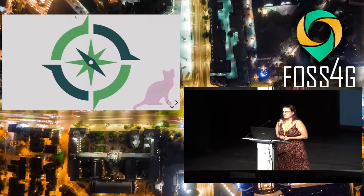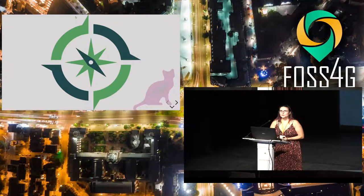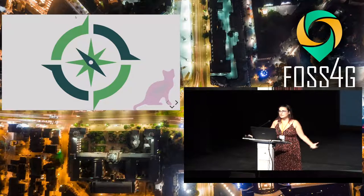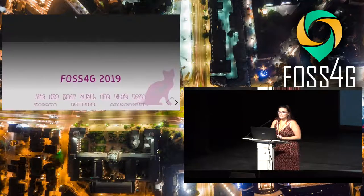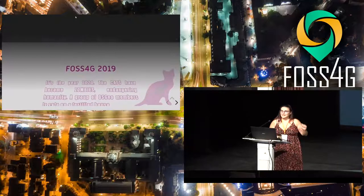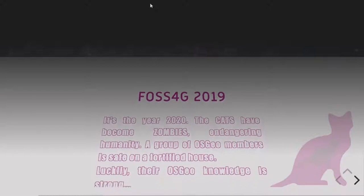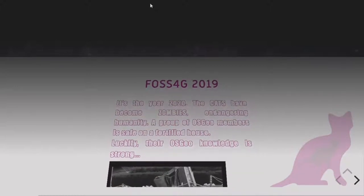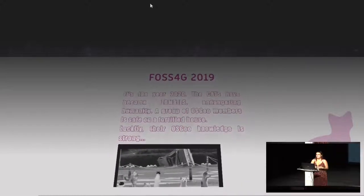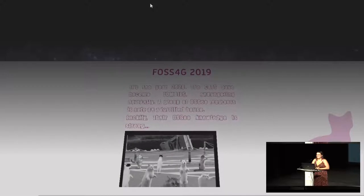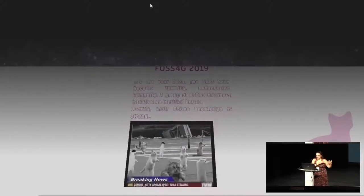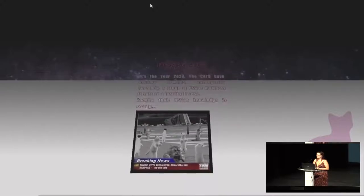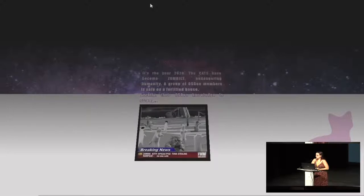OSGeo is huge, so I was looking for some use case that can cover all the cases to explain everything that we do. I could only think of catastrophic things to cover all the use cases, so I came up with this story: zombie kitten apocalypse, and how — thanks to open data, open standards, and open software — people can survive. Yes, we don't have any dress code, we have kittens in keynotes.